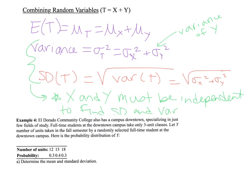We're going to do another example with El Dorado Community College. We have a downtown campus — a different campus from the main campus mentioned in examples one and two. We're going to let Y be defined as the number of units taken by a student at the downtown campus. We'll start by determining the mean and standard deviation of the units, which is the same process as in the previous section. The mean of Y, or expected value of Y, ends up being 15 units.